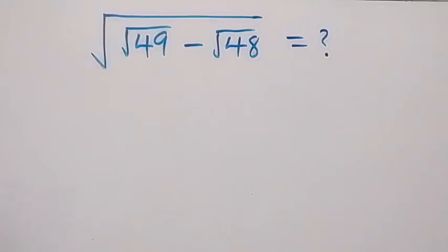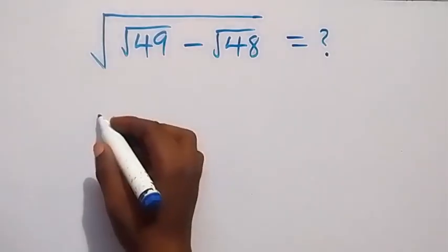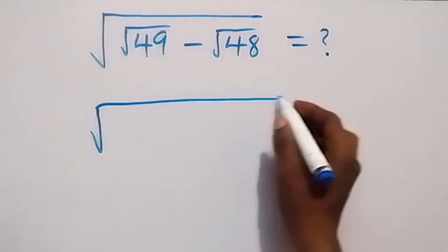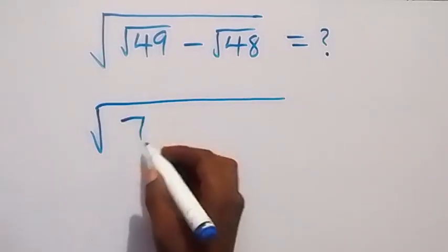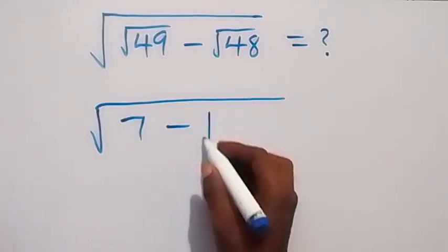Hello, you are welcome. How to solve this nice math problem involving roots. From here we have square root of root 49 minus root 48. And from here, this becomes square root of root 49, that's 7, then minus here...